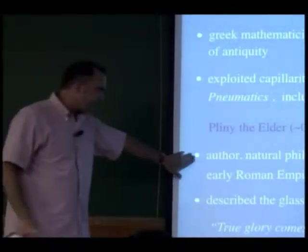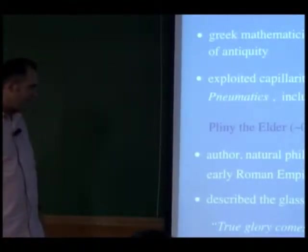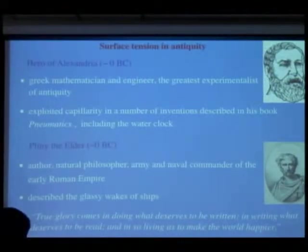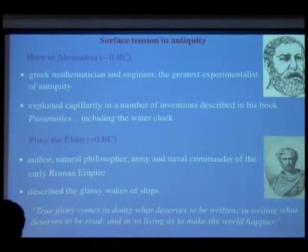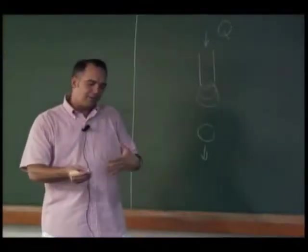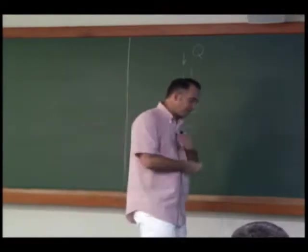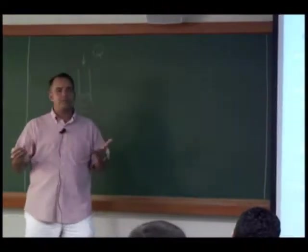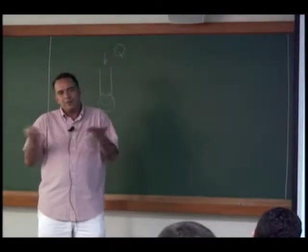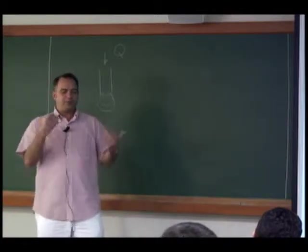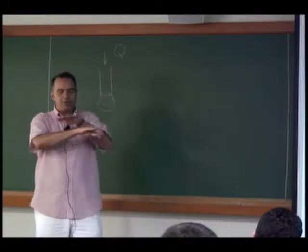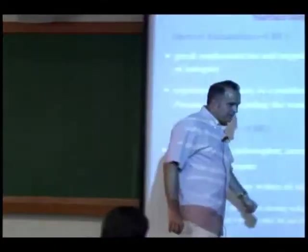Pliny the Elder was another polymath who described the glassy wakes of ships. When ships came into harbor, despite waves everywhere, there were regions completely flat. This has to do with the entrainment of biomaterial — waste suspended in the water column that is surface active, meaning it sticks to the interface, reduces the surface tension, and makes the interface behave like an elastic. This is why when you're swimming in a lake and swish water up, you get flat regions.